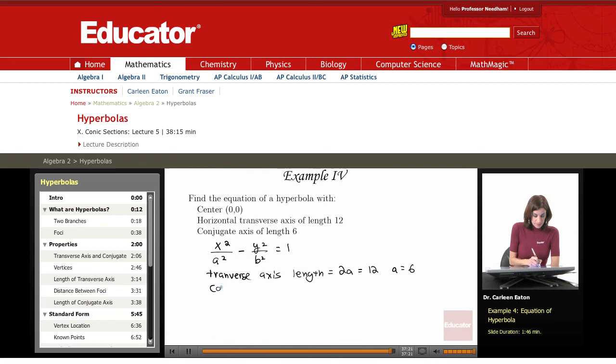The conjugate axis length, recall, is equal to 2b, which is 6. So b equals 3.